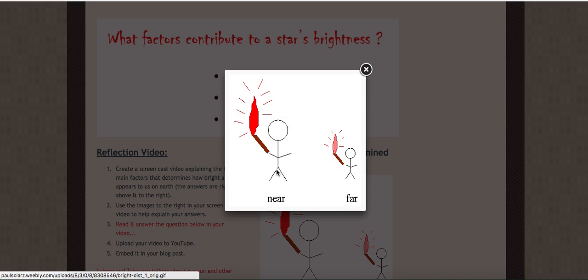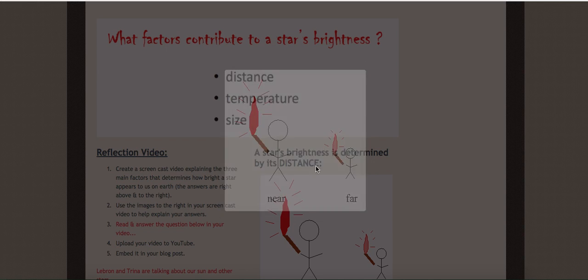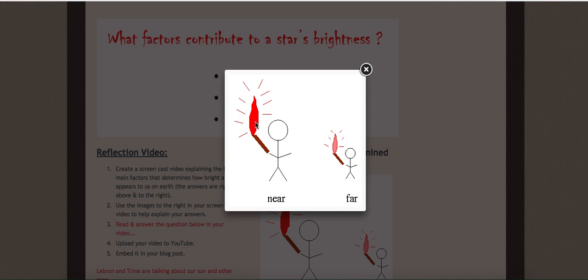The brighter it is, the closer it is and the higher temperature it is. But the temperature is higher if it's blue or white.